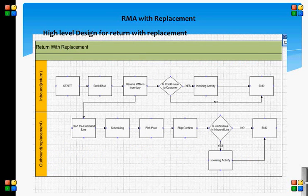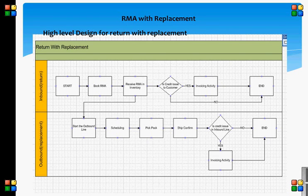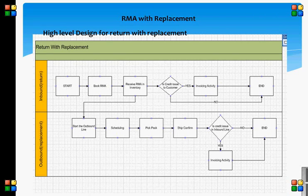This is the high-level design for return with replacement. For the inbound, we begin by booking the RMA, then receiving the RMA into inventory. Once the RMA is received successfully, our custom activity creates the outbound replacement line. Then we check if credit needs to be issued to the customer on the inbound or return line. If yes, progress the workflow to the invoicing activity, then close the line. If no, simply close the line. For the outbound, create the outbound replacement line and progress as follows: scheduling, then pick/pack, then ship confirm. Check if credit is issued to the inbound or return line. If yes, progress to invoicing activity, then close. If no, simply close the line.